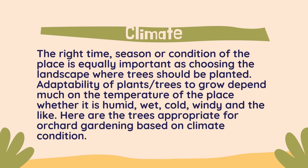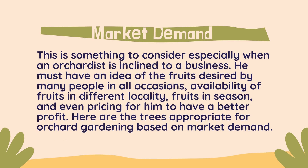Climate — the right season or condition of the place — is equally important as choosing the landscape where trees should be planted. The adaptability of trees to grow depends greatly on the temperature of the place, whether it is humid, wet, cold, or windy. Here are the trees appropriate for orchard gardening based on climate.